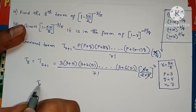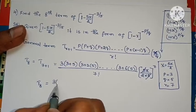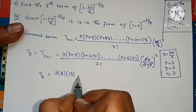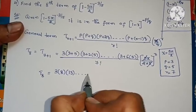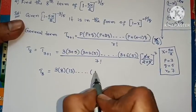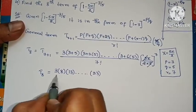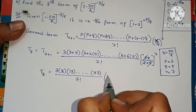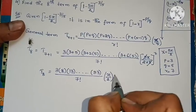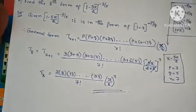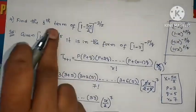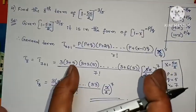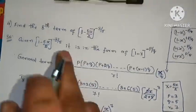So T8 = [3 × 8 × 13 × ... × 33] / 7! × (5x/2)^7. The 5 values cancel out. The problem for the 8th term is complete. To find any term, first write the general term, then substitute the p, q, x, and r values.